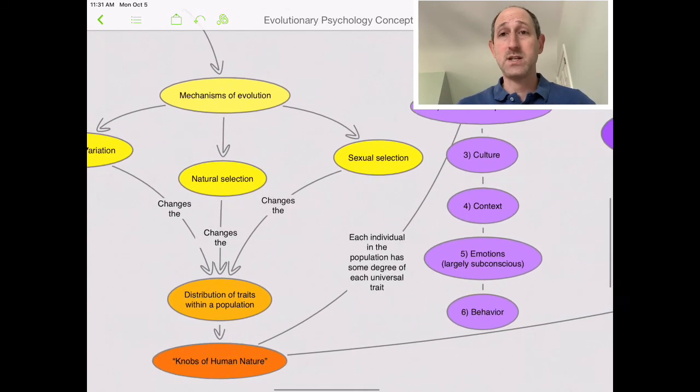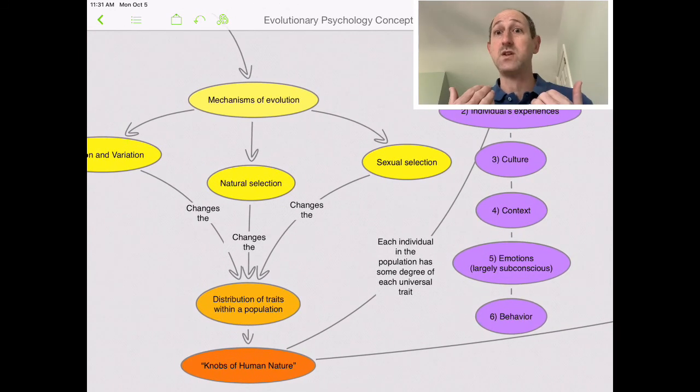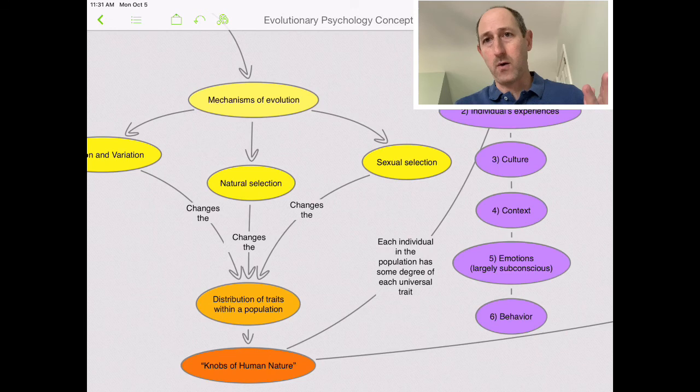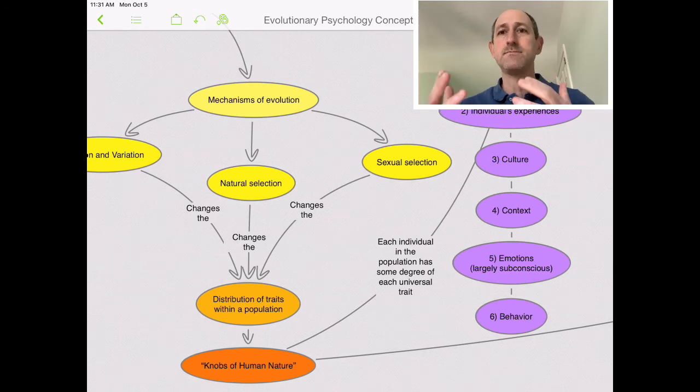Sexual selection, and not all organisms have it, but we do, is the selection that we do on each other. Generally speaking, in our species, males and females select to reproduce with other males and females, until very recently in our history, which now we can do some different things. But for evolutionary speaking, that's the way it was done.